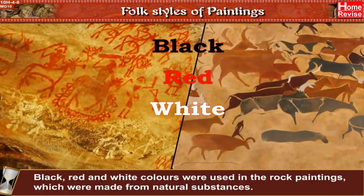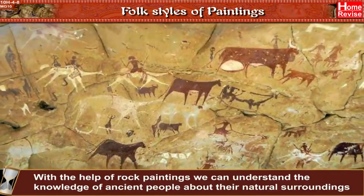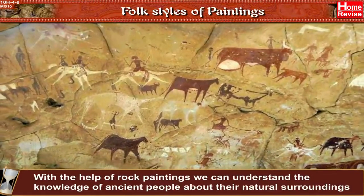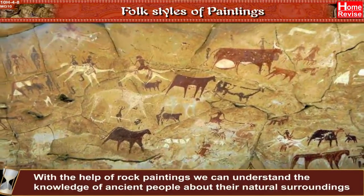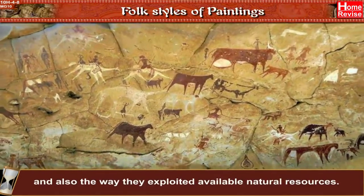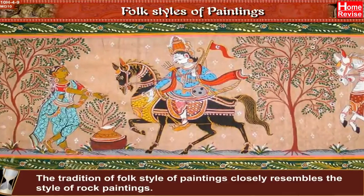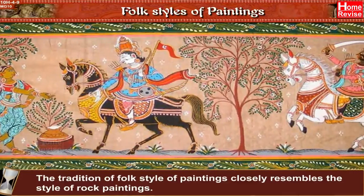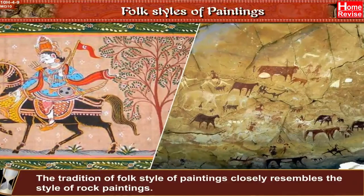Black, red, and white colors were used in rock paintings, made from natural substances. With the help of rock paintings, we can understand the knowledge of ancient people about their natural surroundings and the way they exploited available natural resources. The tradition of folk style of paintings closely resembles the style of rock paintings.